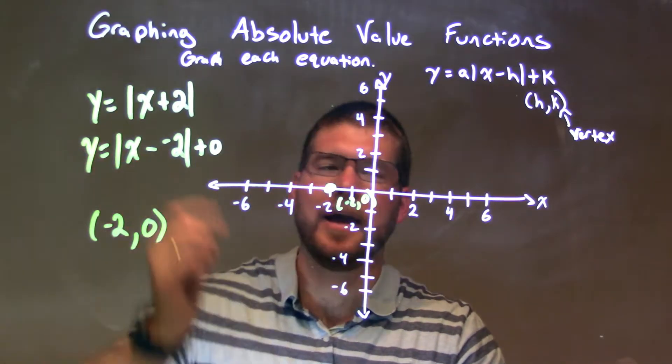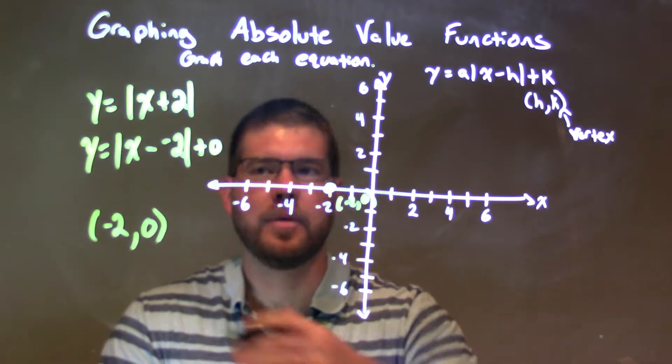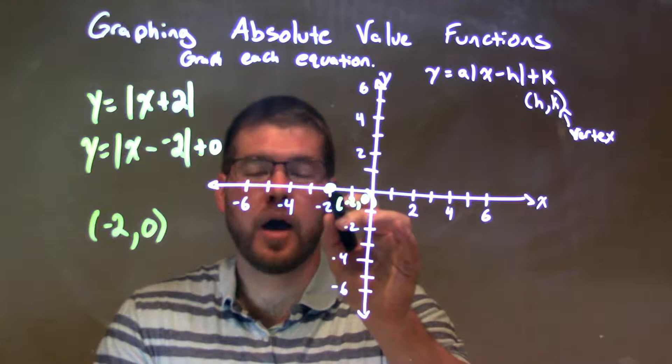Now, our slope is our a value that's up front. It's just a 1 right there. So, our slope is a positive 1.